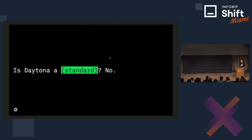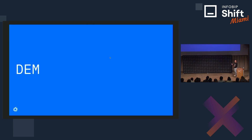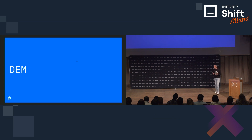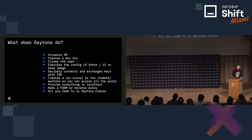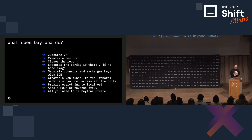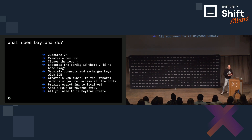Although the title of the talk is Standardized Development Environments, Daytona is not a standard — it is a development environment manager, meaning it's an automation tool that takes care of everything you need to get up and running without you having to think about it. When running remotely, it creates a VM; when running locally, it doesn't. It creates a dev environment inside that, clones a repo, executes configuration if present, securely connects and exchanges keys with your IDE, creates a VPN tunnel so you have access to all your ports, proxies everything to localhost, and adds a fully qualified domain name or reverse proxy so you can share with people. All you need to type is 'daytona create'.